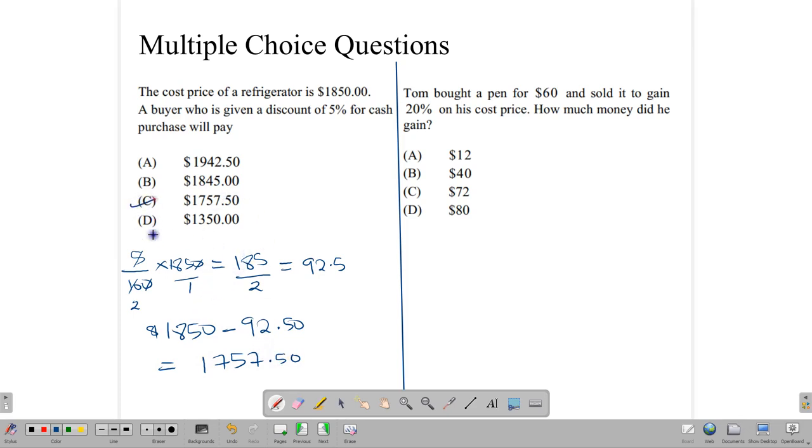So this is how much the person would pay, in which case your answer would be here at C. Now this one, Tom bought a pen for $60 and sold it to gain 20% on his cost price. So how much did he gain? So this question is not asking about cost price, selling price. It's asking how much money he gained. So let us find what 20% of 60 is. So 20 over 100 multiplied by 60. Remember, you could turn them around if you want. You could say 60% of 20. Doesn't matter. But here we can do a simple division again, dividing by 10s. So here we have 2 times 6. And 2 times 6 gives us 12. So how much money did he gain? That is the important question. And he will gain $12, which means that our answer would be A.